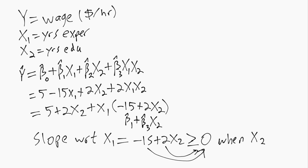x2 is greater than or equal to negative 15 divided by 2, which is 7.5. So if you imagine we have a dataset where maybe the lowest education level in the dataset is 10 years of education.